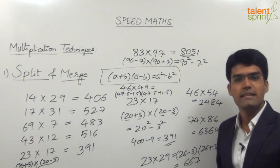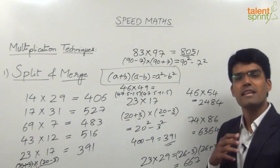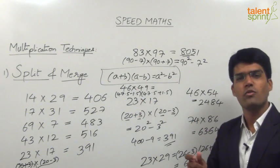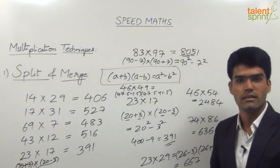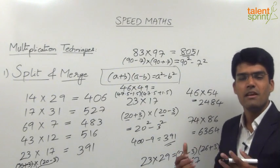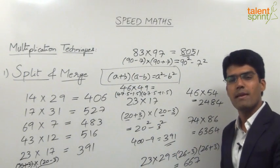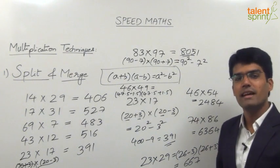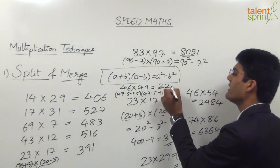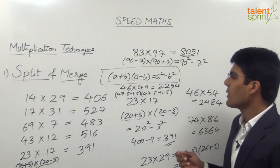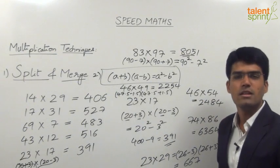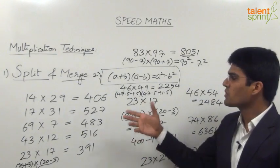For 46 into 49, it is better to follow split and merge: take 46 fifty times and give it back one time. 46 into 50 is 46 × 5 × 10 = 230 × 10 = 2,300. Because we took it one time extra, we give it back: 2,300 - 46 = 2,254. So depending on the question, either apply split and merge or use (a + b)(a - b) = a² - b².